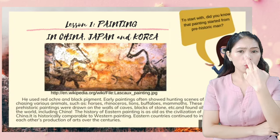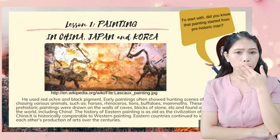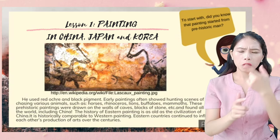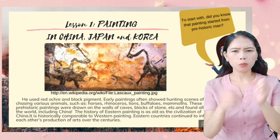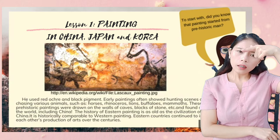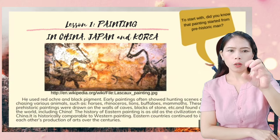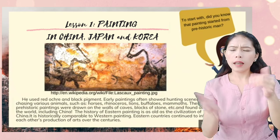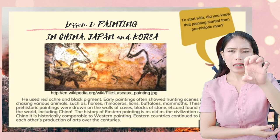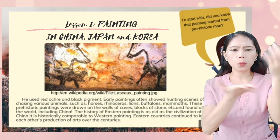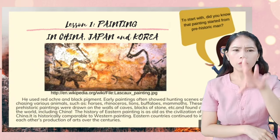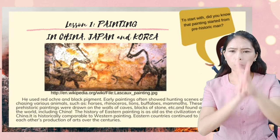He used red ochre and black pigment. Early paintings often showed a hunting scene of a man chasing various animals such as horse, rhinoceros, lions, buffaloes, and mammoths. These prehistoric paintings were drawn on the walls of caves and blocks of stone, and found all over the world, including China.